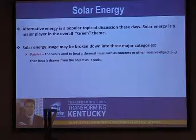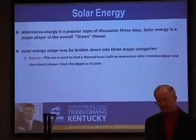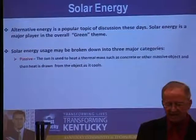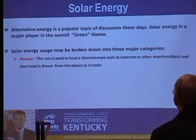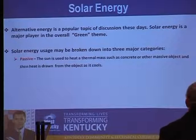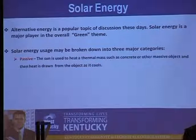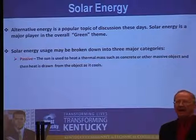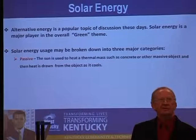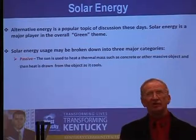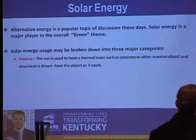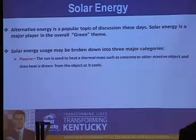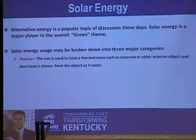One is passive. In passive solar energy — something humans have used since the cavemen days, they just didn't know what to call it — the sun is used to heat a thermal mass such as concrete or a big rock, and then heat is drawn from the object as it cools. For example, a brick home on a bright sunny winter day will have heat being liberated from the side of the house. Technically, that's passive solar energy.